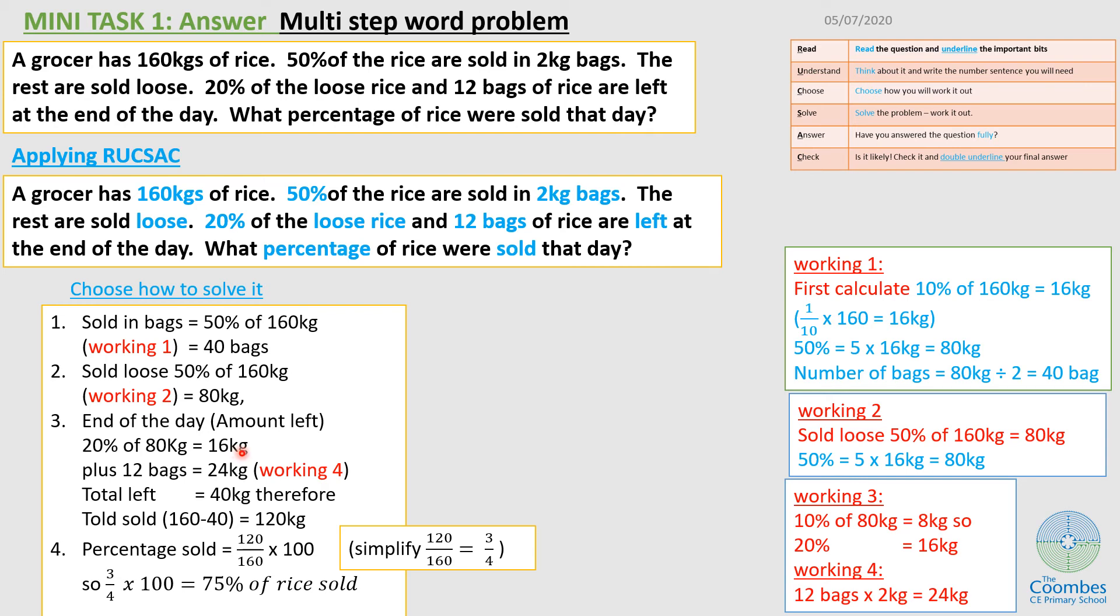But it also says 12 bags were left. But I know each bag had 2 kg in it. So if I times that by 2, that will give me 24. So at the end of the day, the amount of rice left is the total of these. And if I add them up, that will give me 40 kg. 40 kg were left.